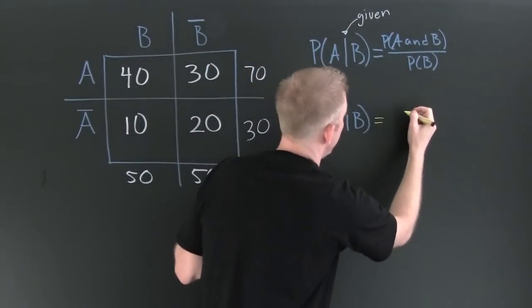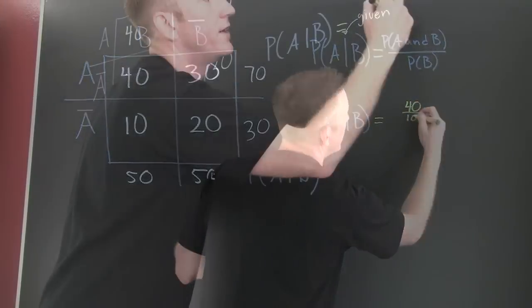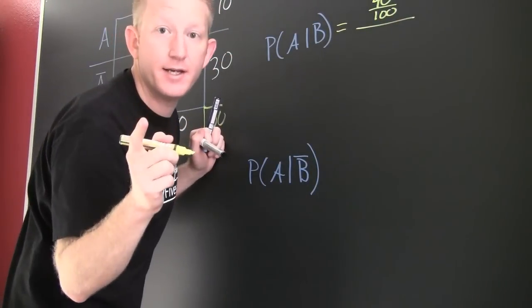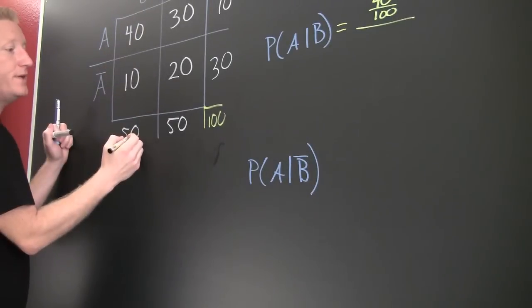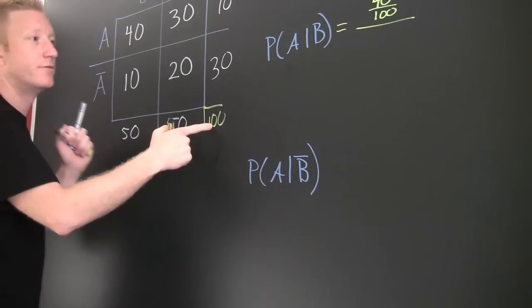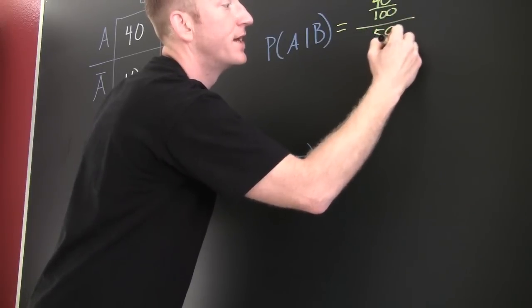So the probability of A and B is going to be 40 out of 100 divided by the probability of B. Now here we see the probability of B is all of B divided by the total number. So this is 50 over 100. This is 50 over 100.